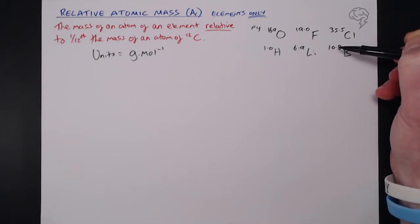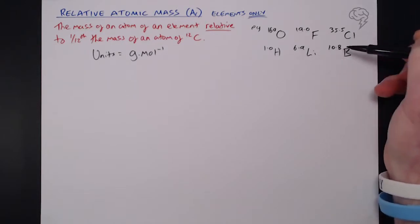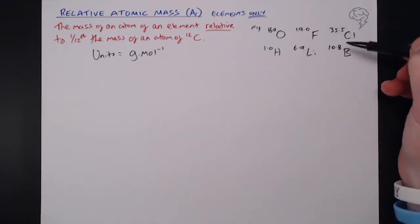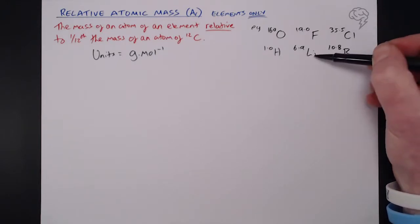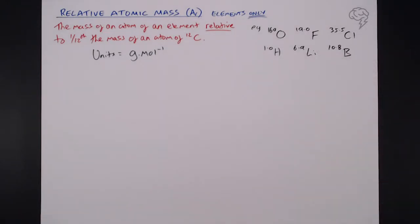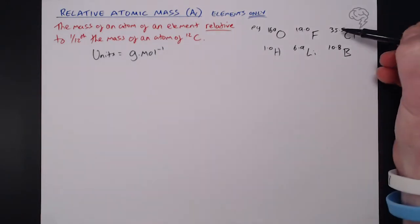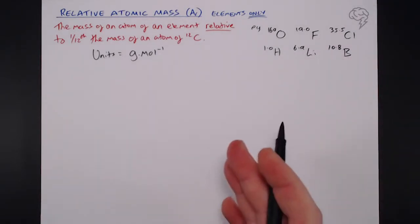What these numbers do is take into account the fact there are different isotopes of these different elements. So there are some boron atoms that have more or less neutrons in, same for chlorine and same for lithium. You'll find that most elements do have isotopes. So these numbers are an average of the masses of those different isotopes.